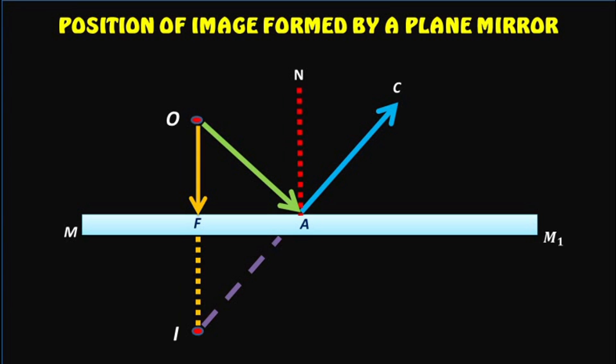The reflected rays FO and AC meet at a point I when they are produced backwards. The point I is the virtual image of the object O.